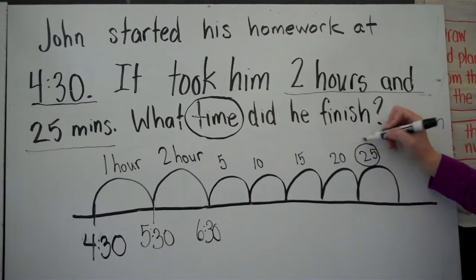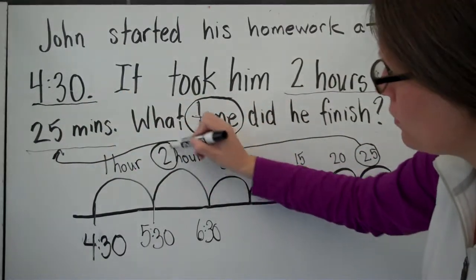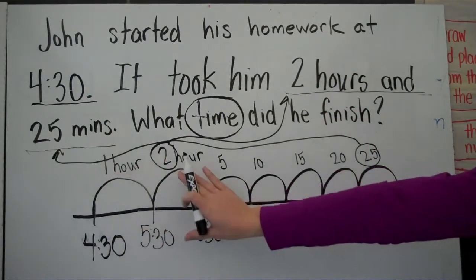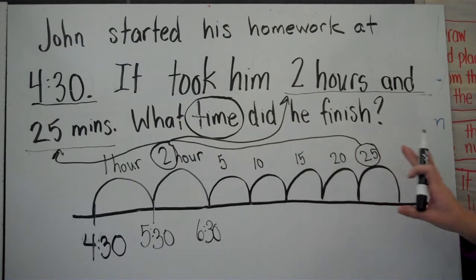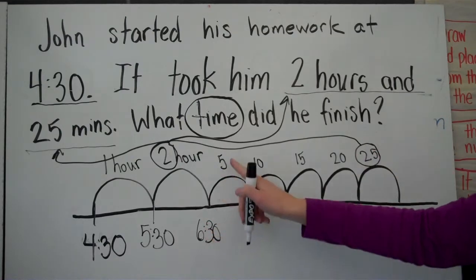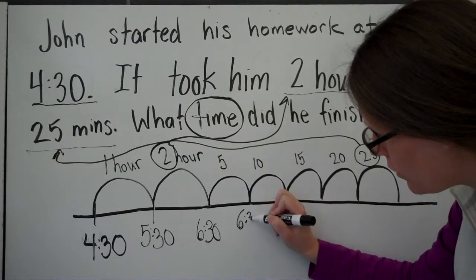So here's my 25, here's my 2. So I have my 1 hour, 2 hours, and 5, 10, 15, 20, 25 minutes.